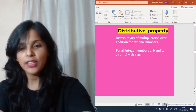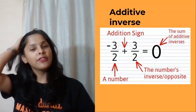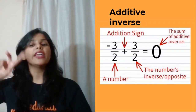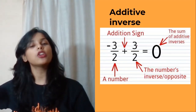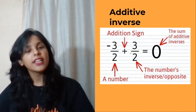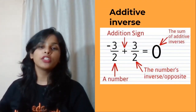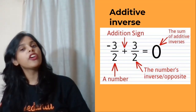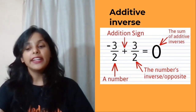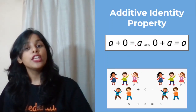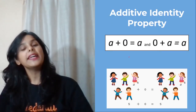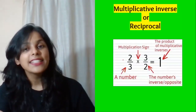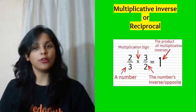Additive inverse of any number means just change the sign — put the opposite sign of that number. For example, the additive inverse of minus 3 by 2 is plus 3 by 2. Additive identity means when you add a number and its inverse you get zero — that zero is the additive identity.